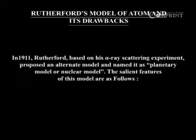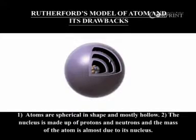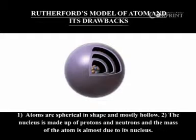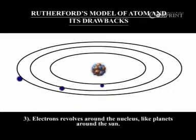The salient features of this model are as follows. Atoms are spherical in shape and mostly hollow. The nucleus is made up of protons and neutrons, and the mass of the atom is almost due to its nucleus. Electrons revolve around the nucleus like planets around the sun.